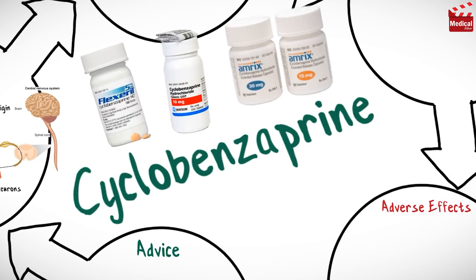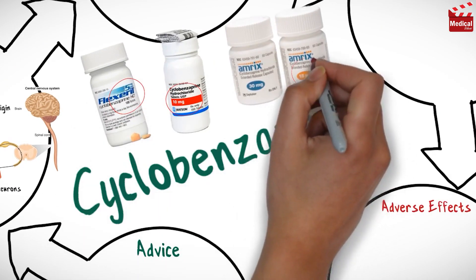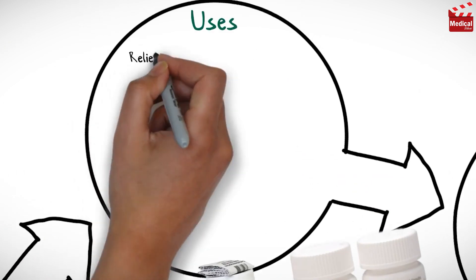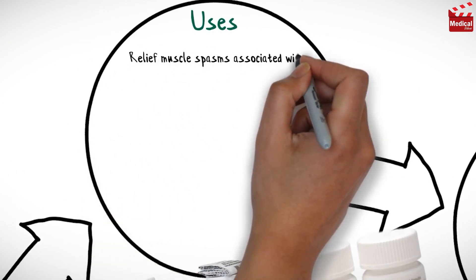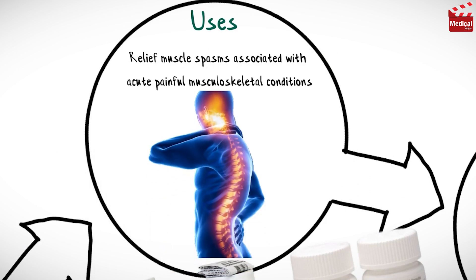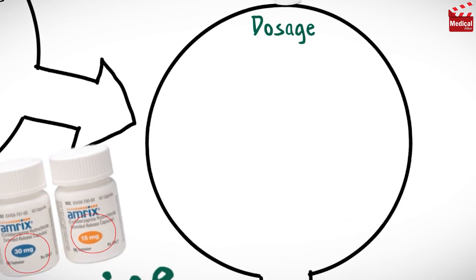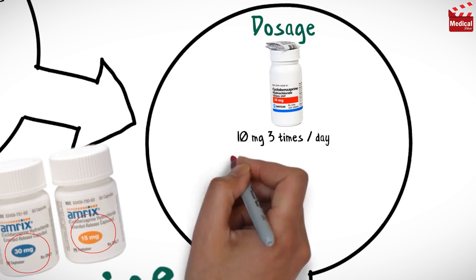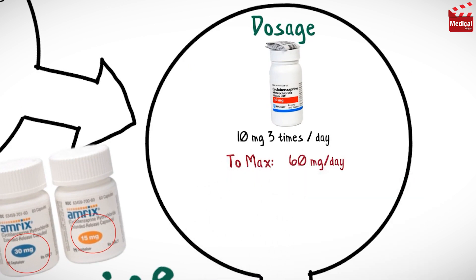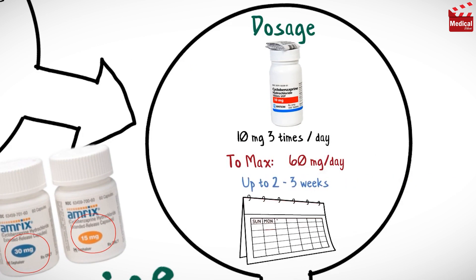It is available as 5 mg, 10, 15, and 30 mg tablets. Cyclobenzaprine is used to relieve muscle spasms associated with acute painful musculoskeletal conditions. The usual dose for adults is 10 mg 3 times per day, and the maximum dose is 60 mg per day. The maximum length of administration is 2-3 weeks.